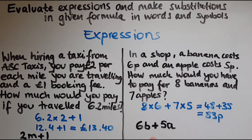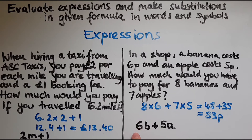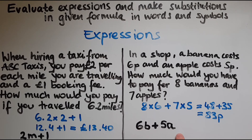As you can see, expressions are made up of different terms together. This is one term where we have numbers and letters, and then we add another term to it. Looking at 6b + 5a, we have a number and a letter, then another number and a letter. There is no equals sign for expressions because they are not equations and not formulas — that is how expressions typically look, for example 2m + 1 or 6b + 5a.